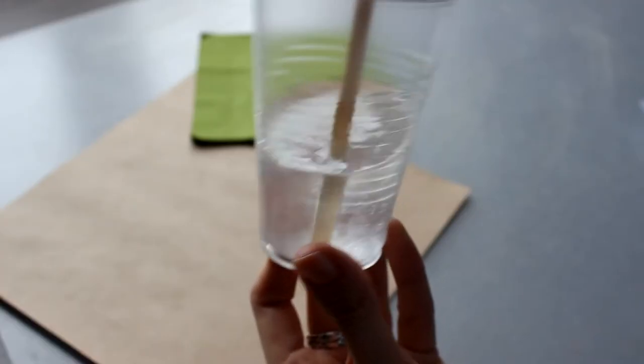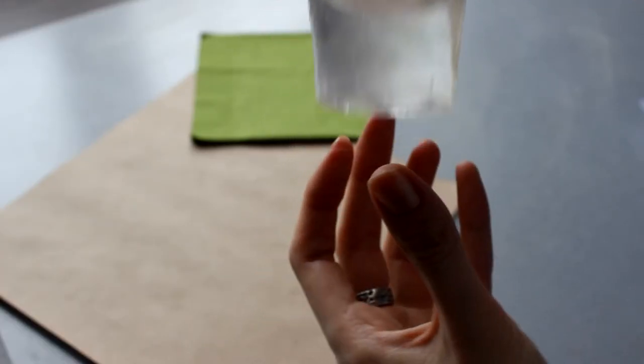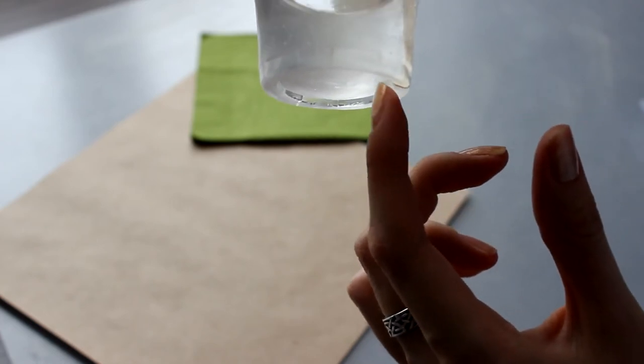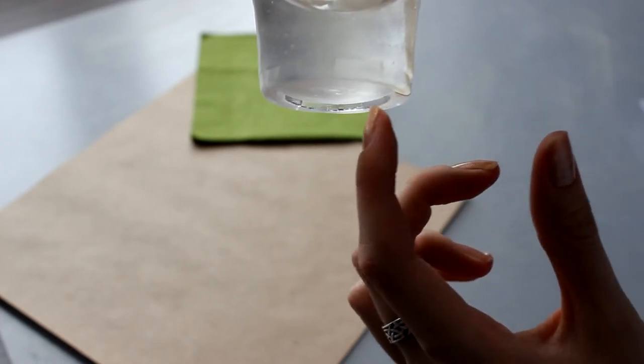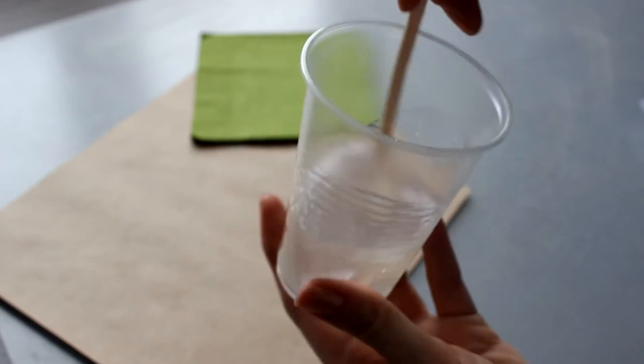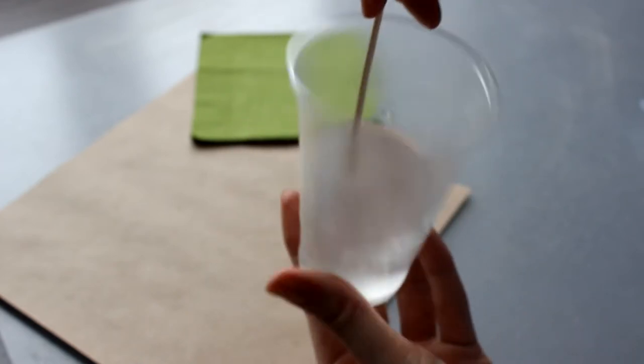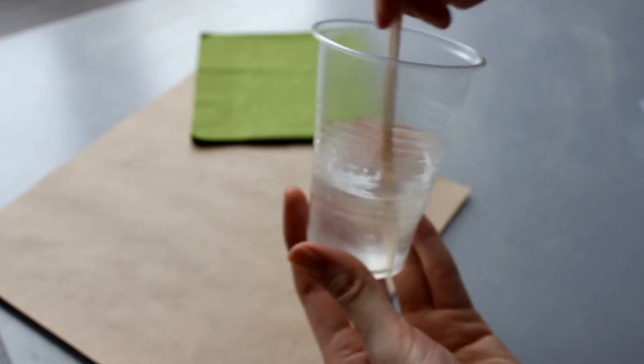By the way, look, if you mix the resin in such plastic cups using a stick, don't forget to do it thoroughly in these deepenings at the bottom. Otherwise, the resin might not be mixed well with the hardener and it will spoil your work. This happened to me several times.